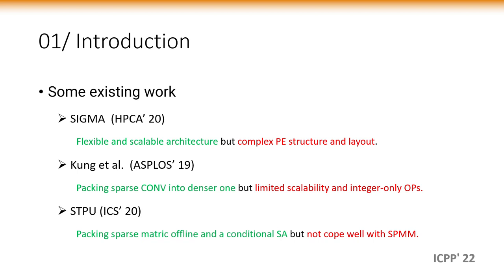A lot of work has made its own contribution for sparse matrix multiplication based on systolic arrays recently. SIGMA proposed a flexible and scalable architecture that offers high utilization through awareness of kernel shape and sparsity. But the sacrifice made for all this is highly complex PE structure and layout.